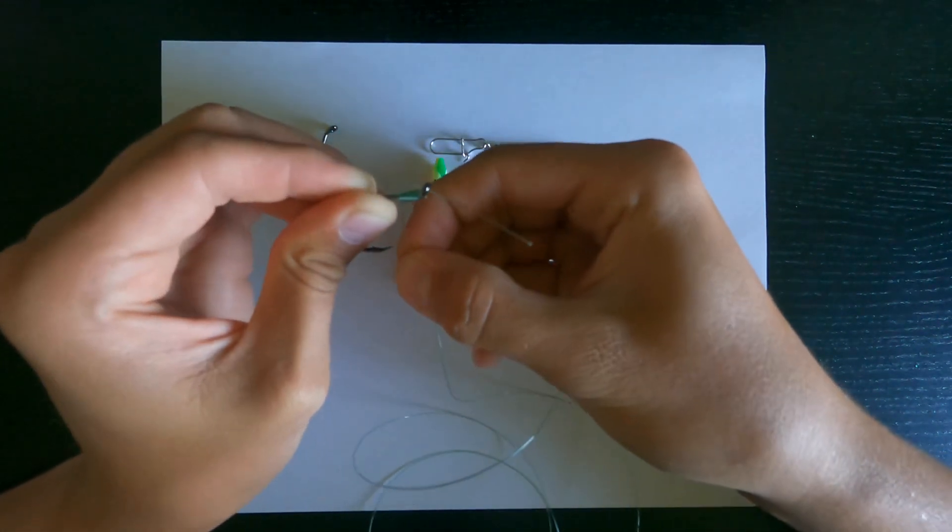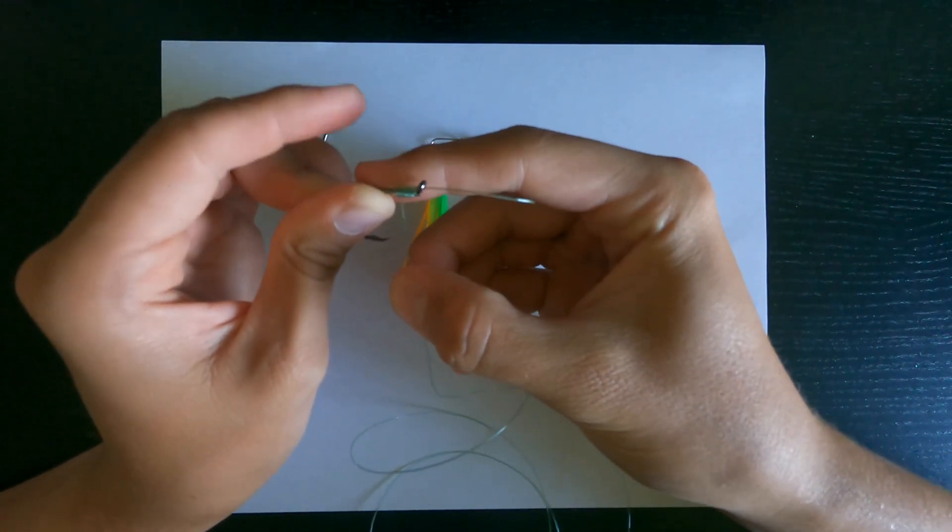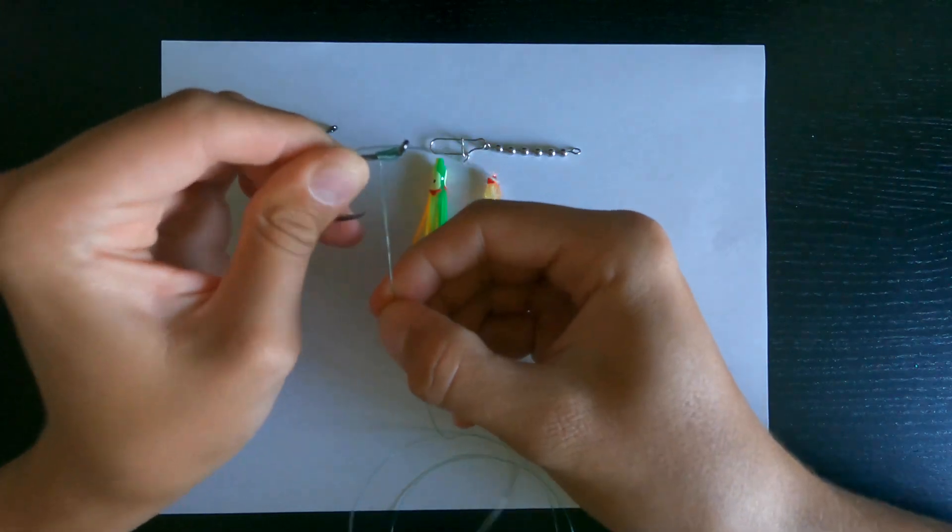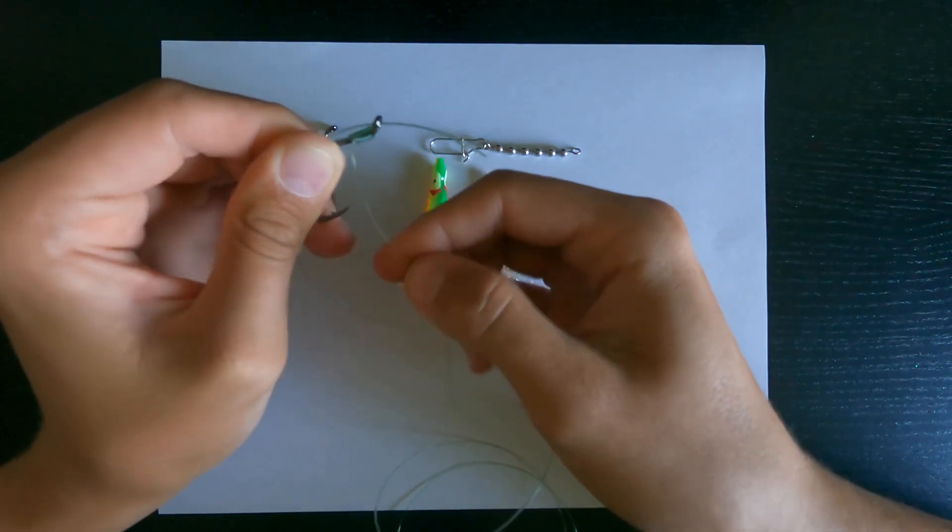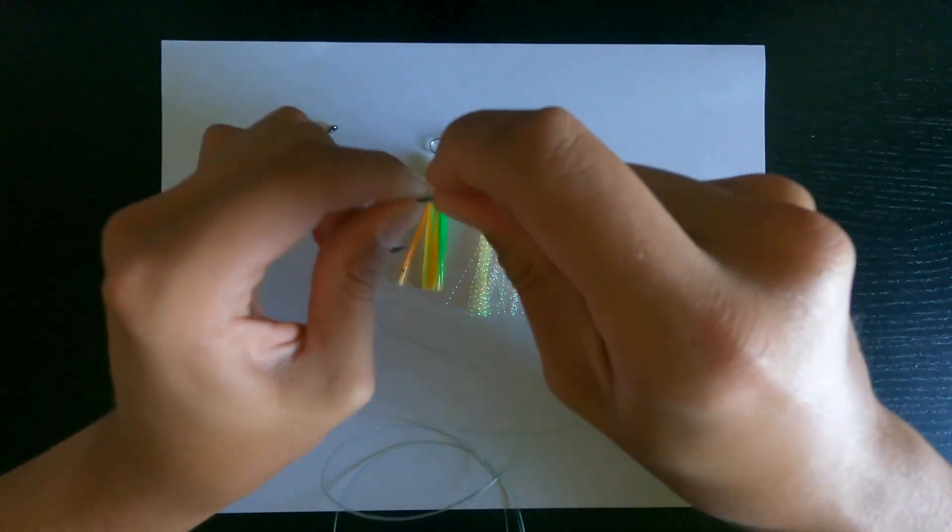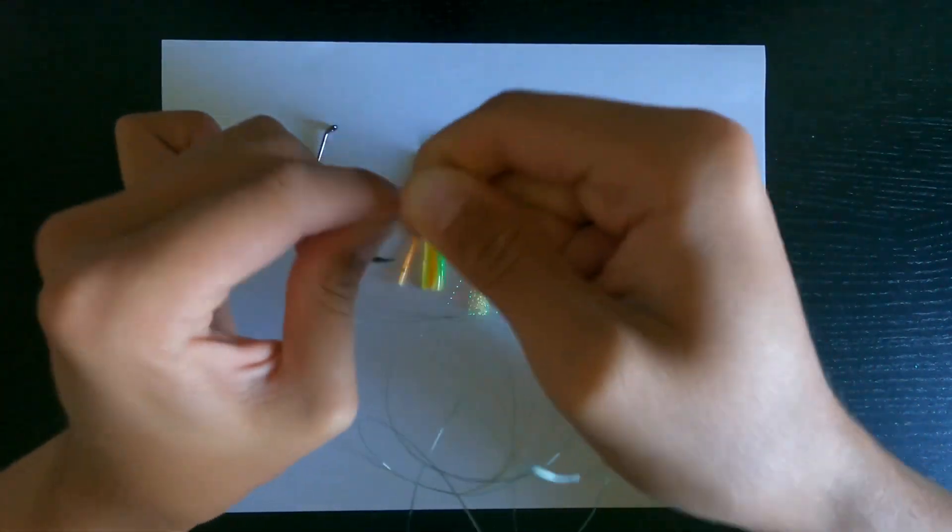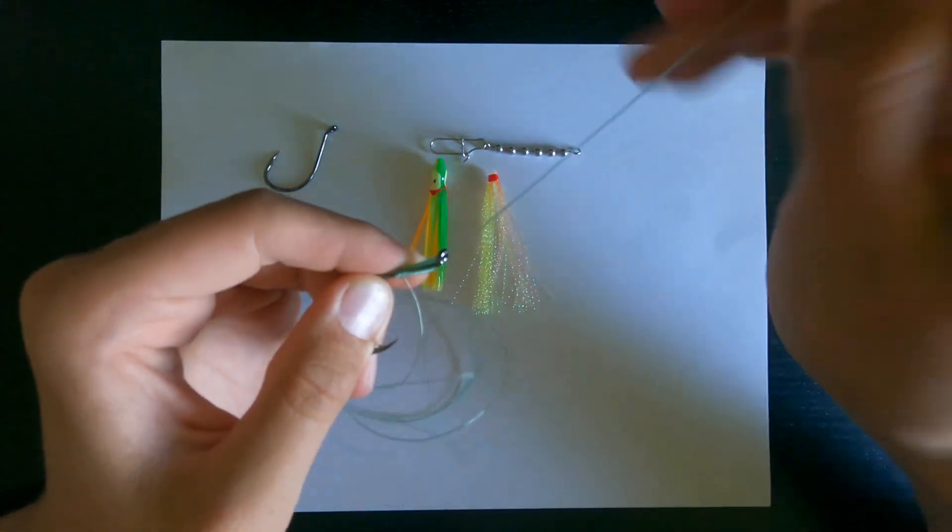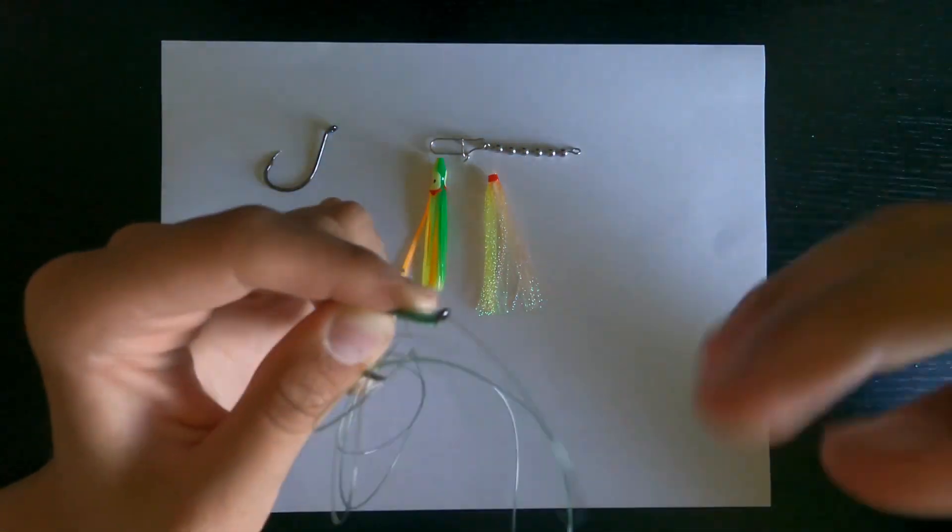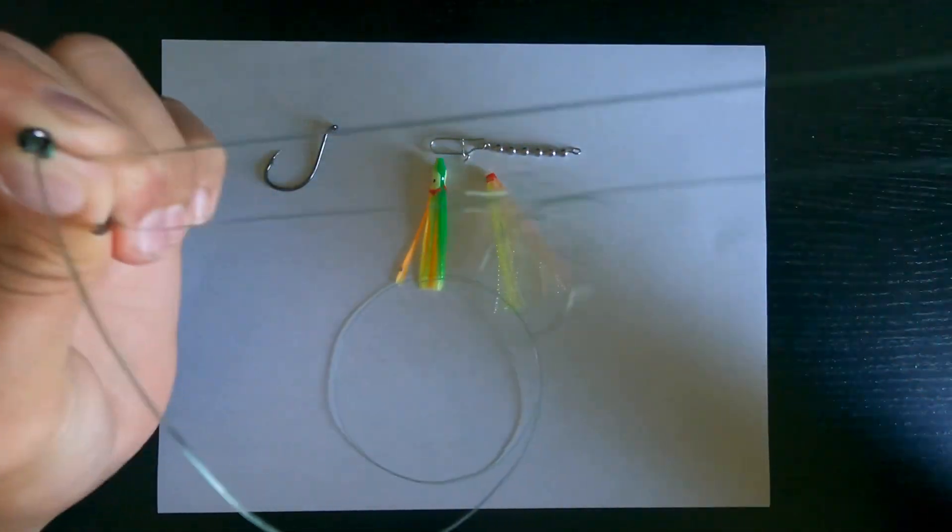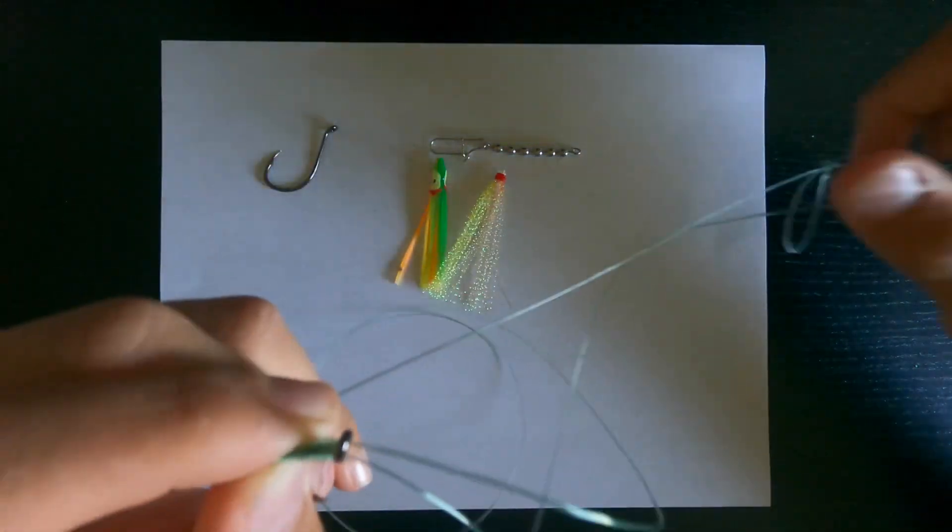And then while I'm grabbing this, I'm going to take that line and lay it down the shaft. So now I have two lines in my hand and I'm going to wrap it eight times again. And I'm going to pull that slack through all the way from that tag end, making sure this stays untangled.